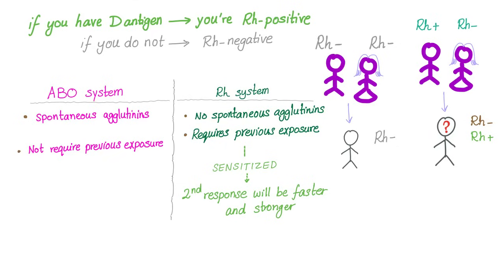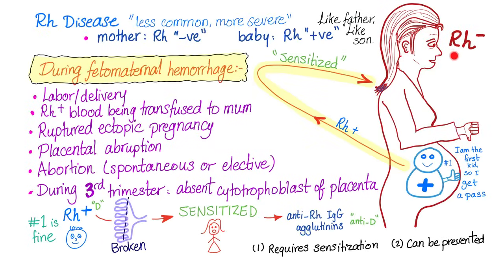The second immune response will be faster and stronger. If both daddy and mommy are RH negative, the baby has to be RH negative — period, end of issue. But if mommy is RH negative and daddy is RH positive, the baby can be either RH negative or RH positive. The problem happens when mommy is RH negative and the baby is RH positive.